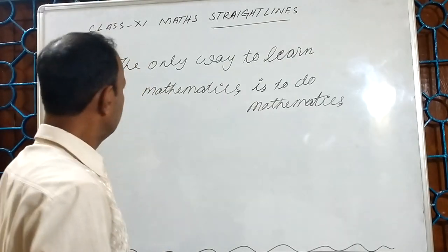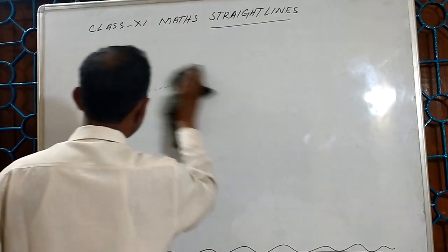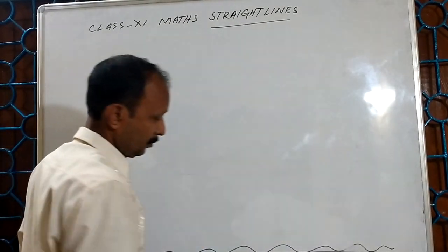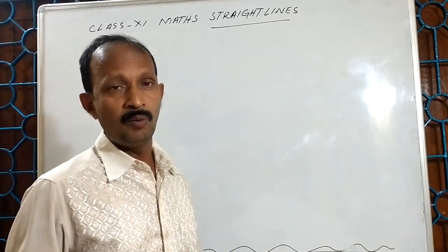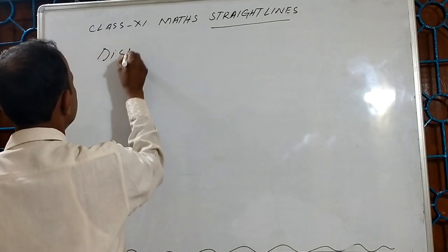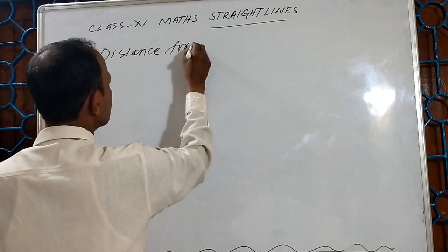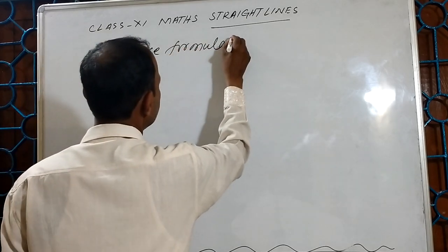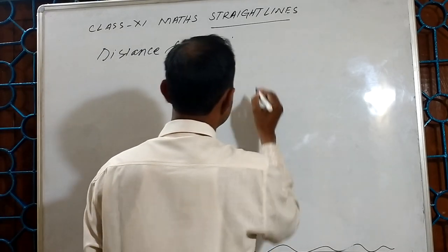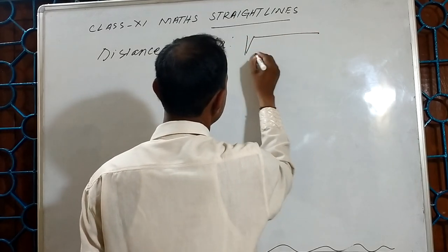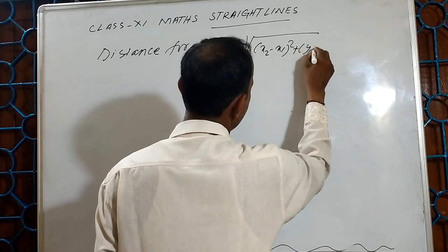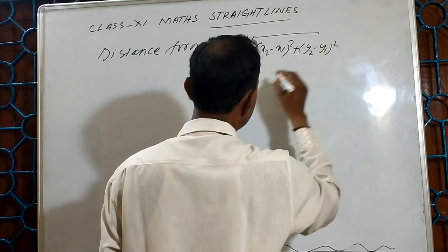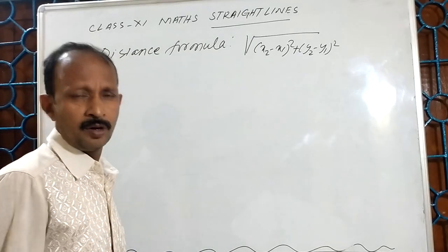Ok children, let us start. One of the most important starting formulas: what is the distance formula? The distance formula is: square root of (x2 minus x1) squared plus (y2 minus y1) squared. This is the distance formula.